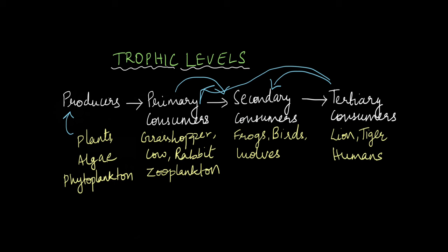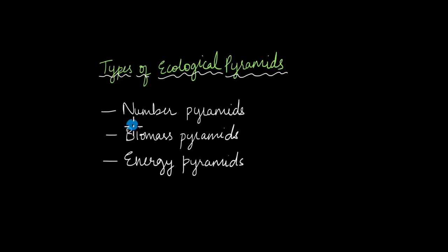There are three different types of ecological pyramids. There is the number pyramid, which is a pyramid of the number of individuals in an ecosystem; the biomass pyramid, which is a pyramid of all the biomass of individuals in an ecosystem; and the energy pyramid, which shows the energy at each trophic level in an ecosystem.